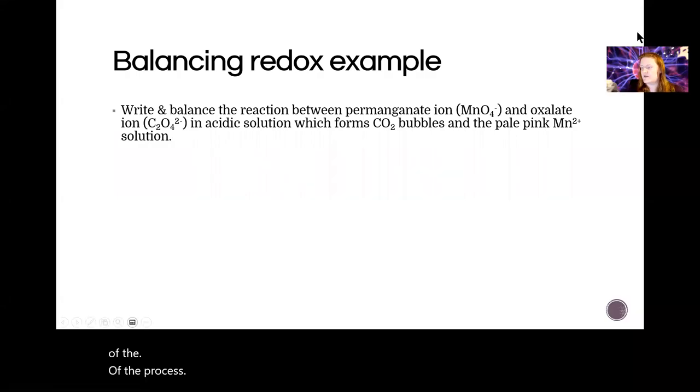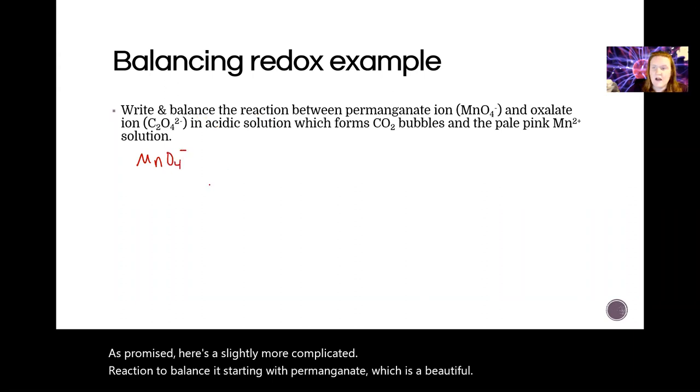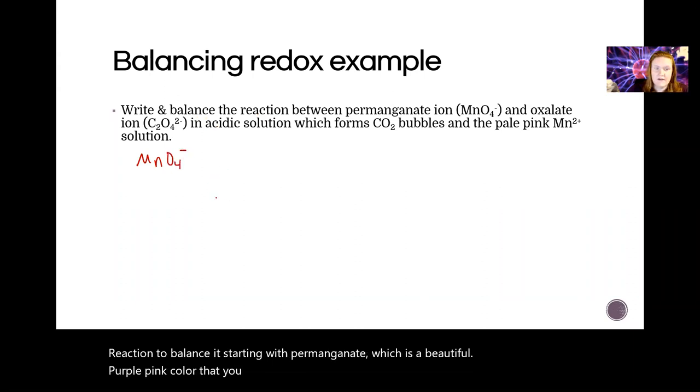Okay, so as promised, here's a slightly more complicated reaction to balance. It's starting with permanganate, which is a beautiful purple-pink color that you make in Chapter 11, and oxalate ion—no cool colors there, but it is pretty fun to say.